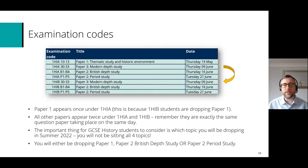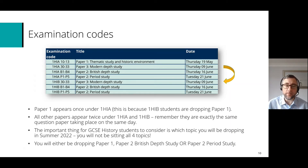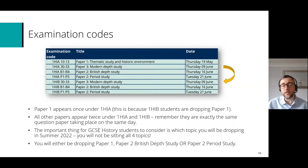If you look in a bit more detail, paper 1 — the thematic study — only appears once on the timetable, under 1HIA, because the 1HIB students are dropping that paper. All the other papers appear twice, under 1HIA and 1HIB, but remember they're exactly the same question paper taking place on exactly the same day — they're just listed twice because of the two specification codes.